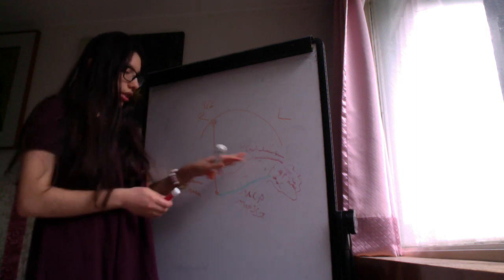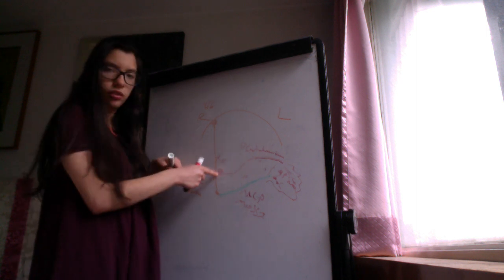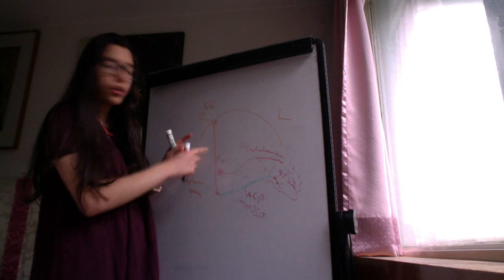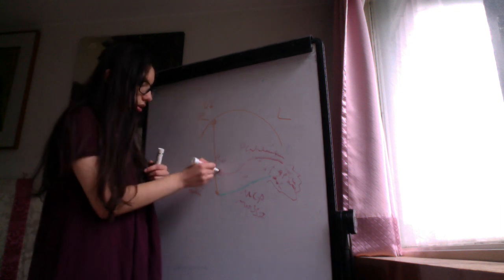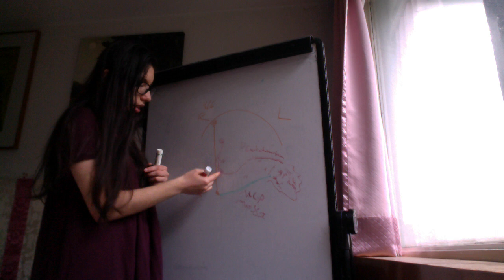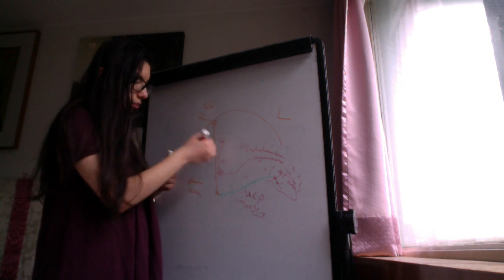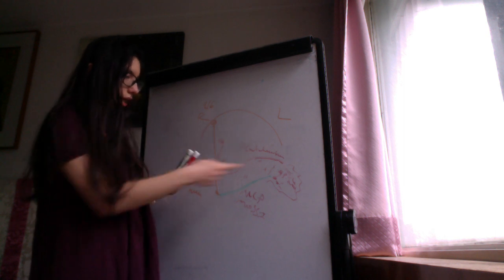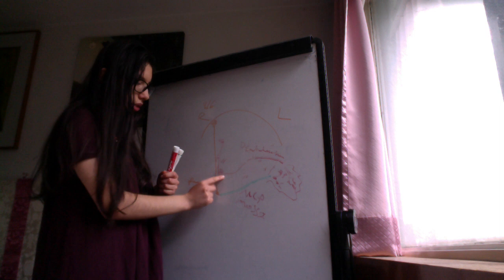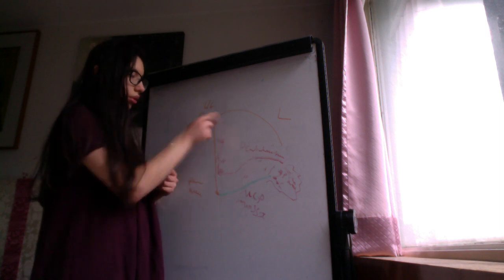These neurons can synapse on the red nucleus or can go directly. They can synapse and go to the thalamus, or just pass through the red nucleus without synapsing and go directly to the thalamus.